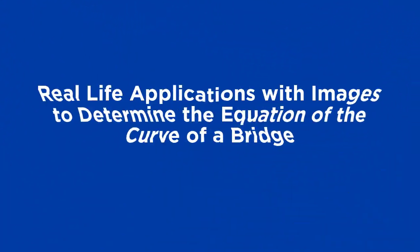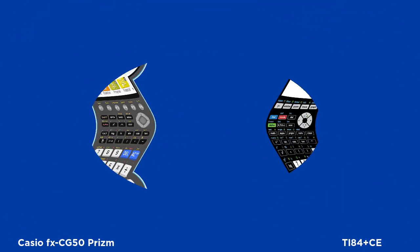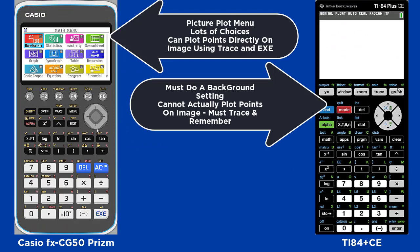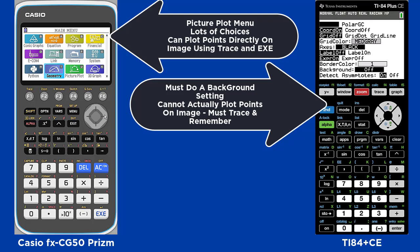In this video we're going to show you how to do a real-life application with images to determine the equation of the curve of a bridge. We're using the Casio FX CG50 Prism and the TI-84 Plus Color Edition graphing calculators.